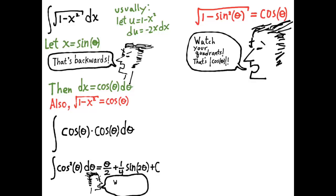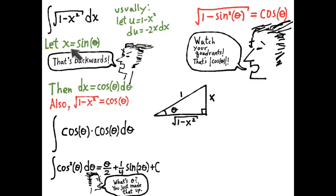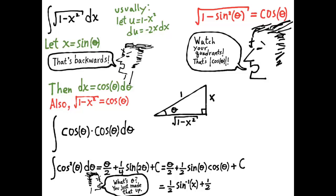Now we have an answer in terms of theta, but since we just made up theta, we have to write it back in terms of x. Once again, we use the triangle. The relationship comes from our definition: x equals sine of theta, so x over 1 is opposite over hypotenuse. The Pythagorean theorem gives us the third side. We don't have sine of 2θ, so we use the double angle formula and rewrite in terms of sine theta and cosine theta, then substitute from the triangle to get one-half sine inverse of x plus one-half sine theta cosine theta plus C.